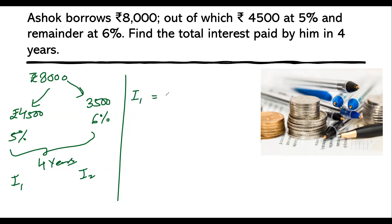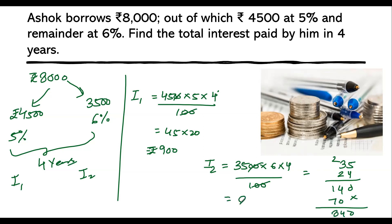So SI1, we know the formula: P × R × T / 100. P is 4,500, rate is 5, time is 4 years upon 100. Two zeros and two zeros cancel, 5 × 4 gives 20, so this becomes 45 × 20 which is 900 rupees as SI1. For SI2, we have 3,500 × 6 × 4 / 100. Two zeros cancel, you have 35 × 24. Five fours are 20 carry 2, three fours are 12 plus 2 is 14, and 35 twos are 70, so this gives 840 rupees.